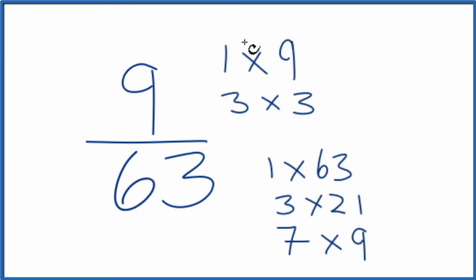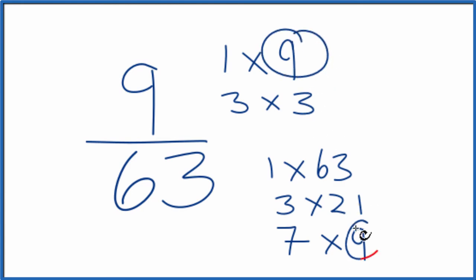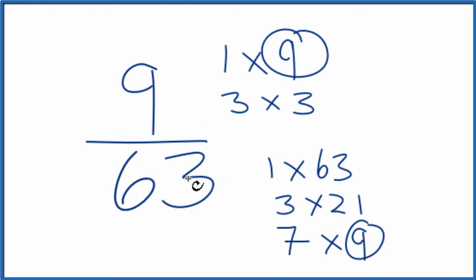When we look at the factors for 9 and 63, we see the greatest common factor is 9. That's the largest number that goes into both the numerator and denominator. So we're going to divide 9 by 9 and 63 by 9, and we'll have simplified 9/63.